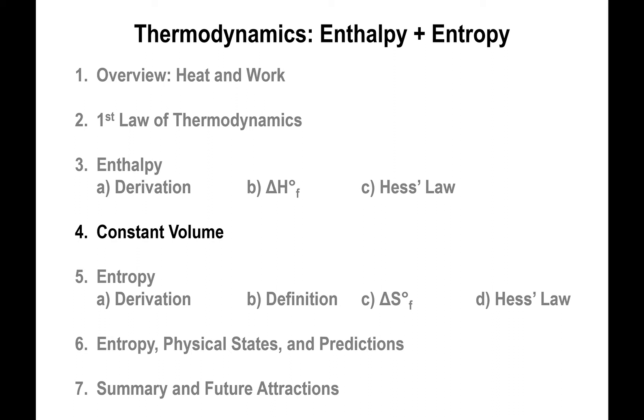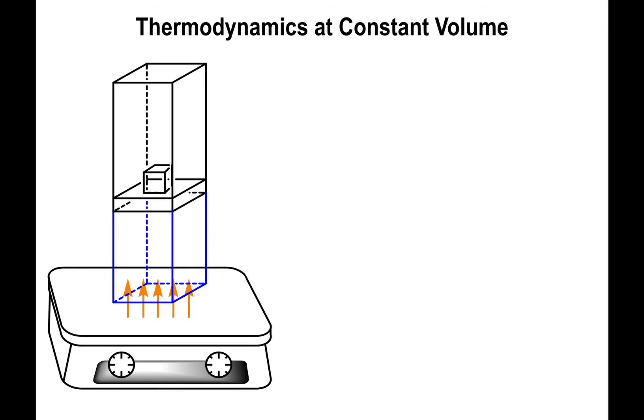Let's talk about constant volume. One thing that already happened is that by selecting the pressure to remain constant, we made the heat turn into an independent parameter which did not depend on path whatsoever. Keeping the volume constant can have another interesting effect. The way you keep the volume constant is by having your gases in a vessel that cannot expand — that is, fully sealed.